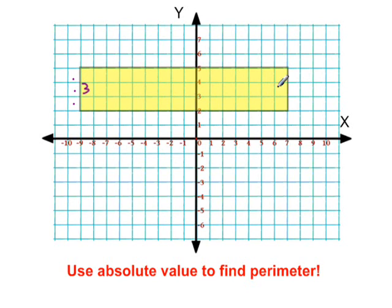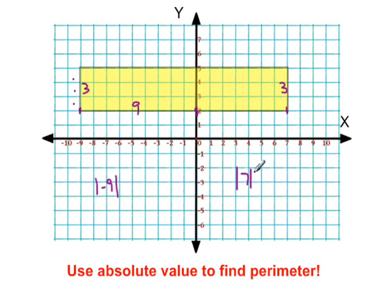But we'll use absolute value to help us find the base. From here to here, this is negative nine. How far is negative nine from zero? Well, the absolute value of negative nine, or how far negative nine is from zero, it'd be nine away. From here to here, from seven to zero, would be the absolute value of seven — how far is seven from zero? It'd be seven. So our base of this rectangle would be 16. To calculate the perimeter, we would just add 16 and 16 and 3 and 3.